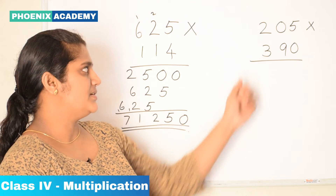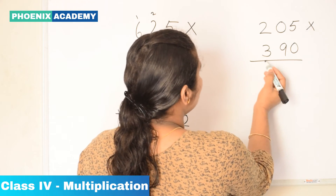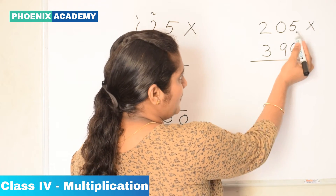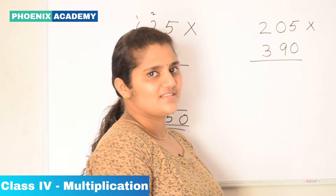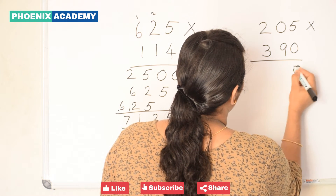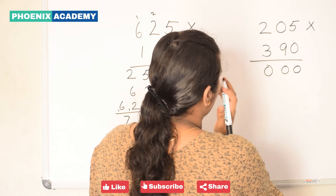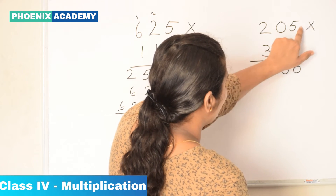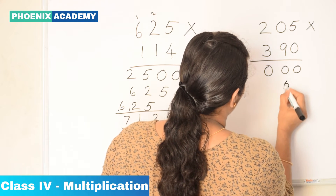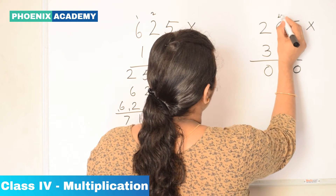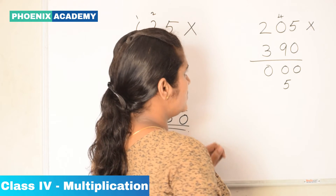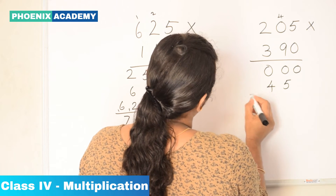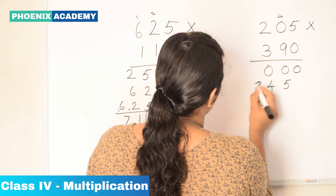Let's multiply these numbers: 205 with 390. Let's multiply 0 with 205 — multiplying a number with 0 is always 0. Then we multiply 9 with 205. 9 times 5 is 45, carry forward 4. 9 times 0 is 0, plus 4 is 4. 9 times 2 is 18, so we write 18.